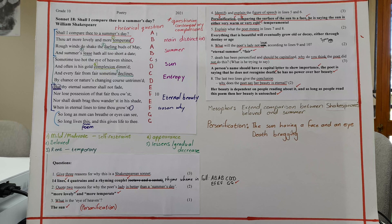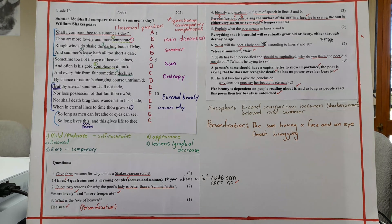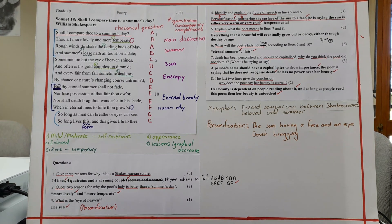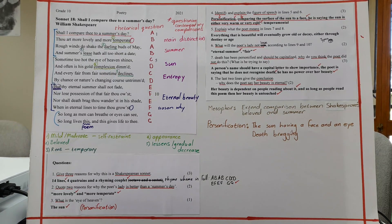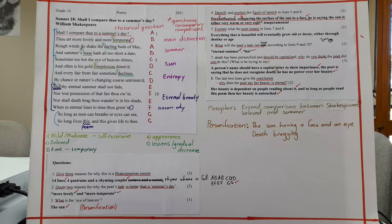Number six. What will the poet's lady not lose according to lines nine and ten? She won't lose her eternal summer, and she won't lose possession of the fear that she has, the beauty.